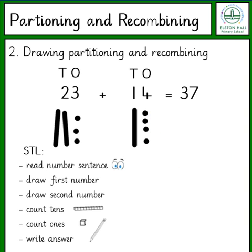We then need to add these back together by counting the 10s as 10s and the 1s as 1s: 10, 20, 30, 31, 32, 33, 34, 35, 36, 37.